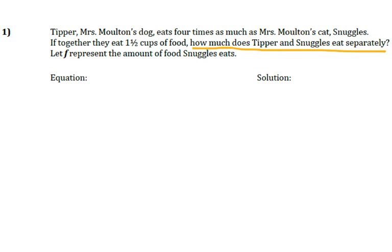We know that Tipper, Mrs. Moulton's dog, eats four times as much as Mrs. Moulton's cat, Snuggles — so, four times as much as Snuggles. If together — so together means that's their total — they eat one and one-half cups. There's our total. We also know that F represents the amount of food Snuggles eats.